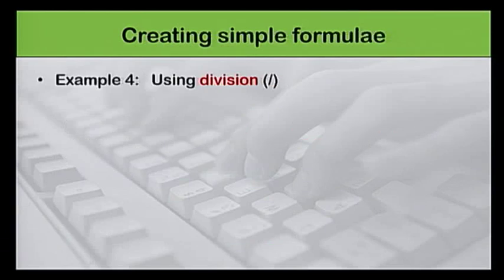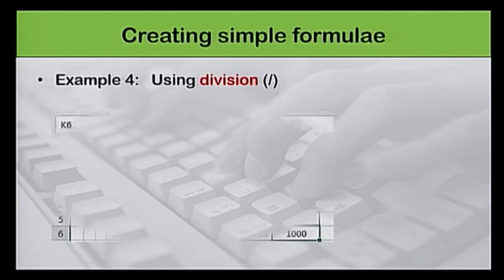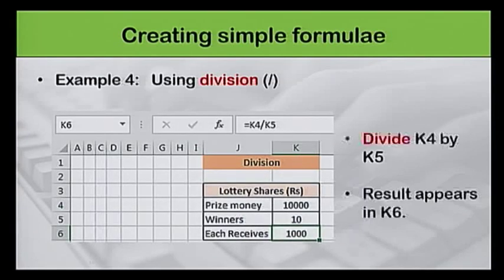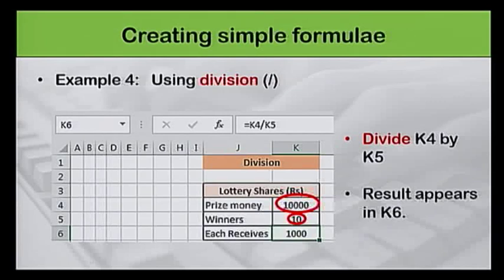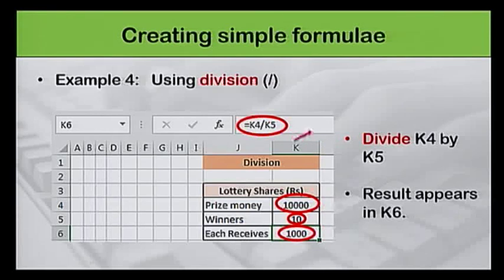For our last example, we will use division to calculate the amount received by each winner for a lottery. This is done by dividing the prize money in cell K4 by the number of winners in cell K5. The result appears in cell K6. The formula used here is equal to K4 divided by K5.